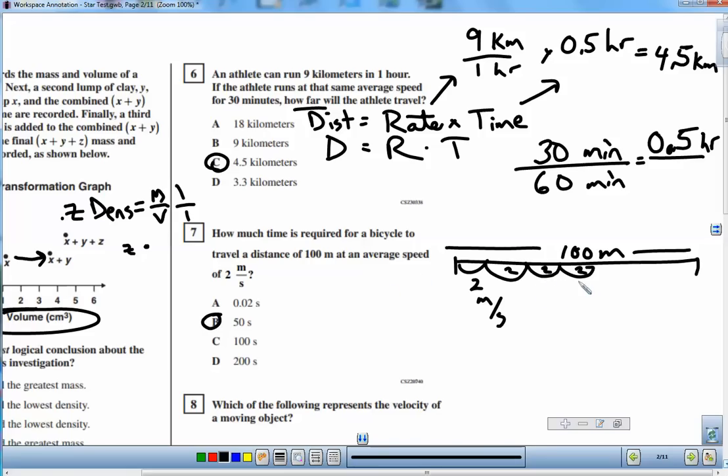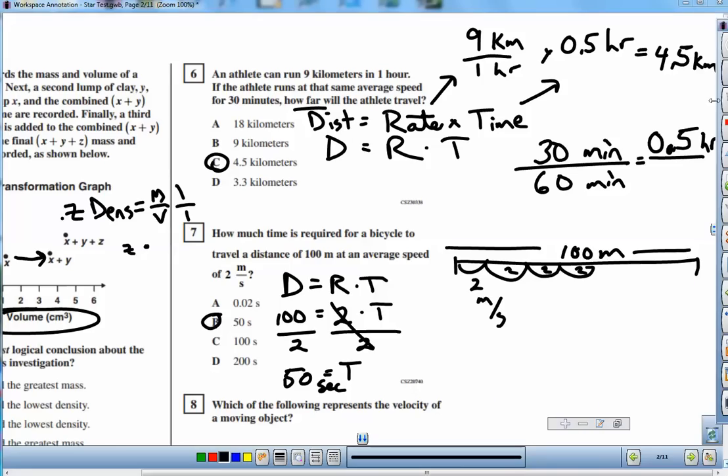Now if you wanted to do it another way, you could use distance equals rate times time again, and distance is 100, the rate is 2, t we don't know, it's an equation you can solve by dividing both sides by 2, and you get t equals 50 seconds. Either way is fine, doesn't matter which way you choose, as long as it works out.